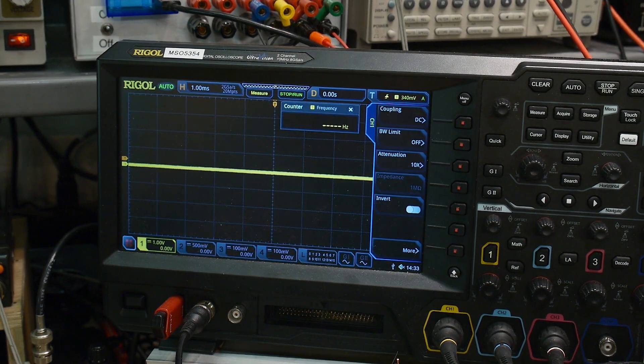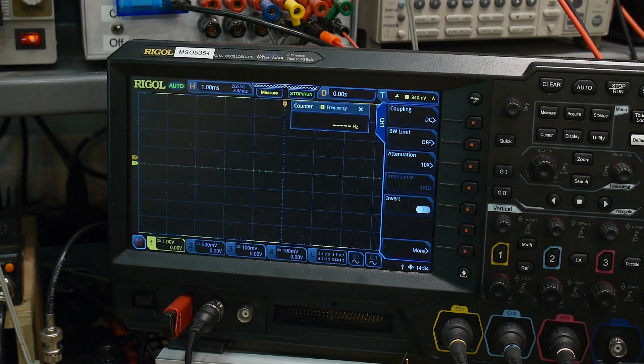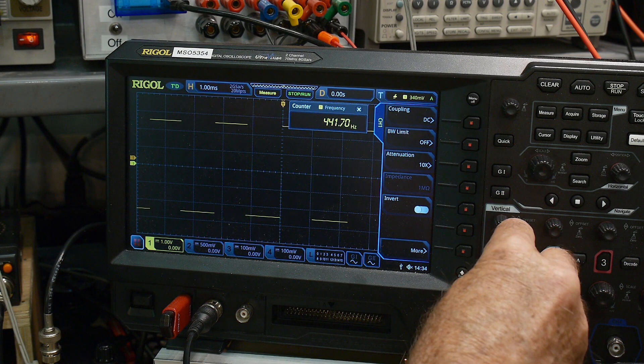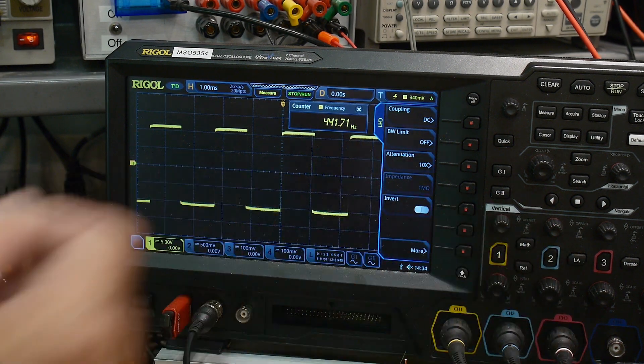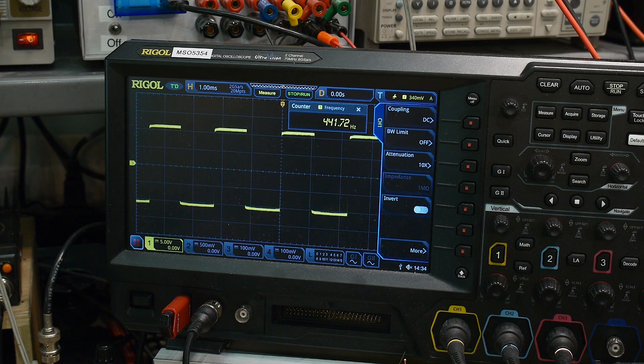We should see a square wave there at pin one. So let's go to our oscilloscope and take a look. Here is pin one, and that's really big, really, really big.